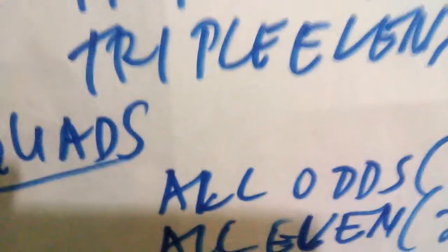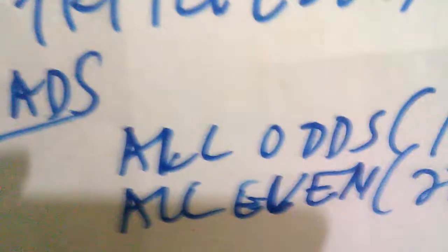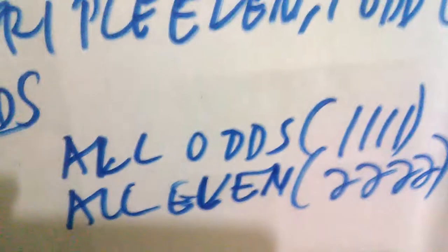And for the quads, or quadruples, we have: all-odd — example 1111; and all-even — example 2222. These are the classifications of number combinations for the odd-even indicator.